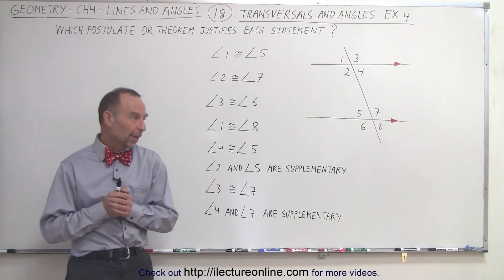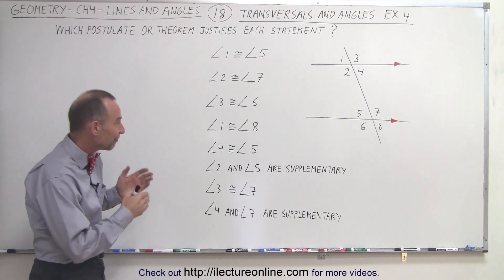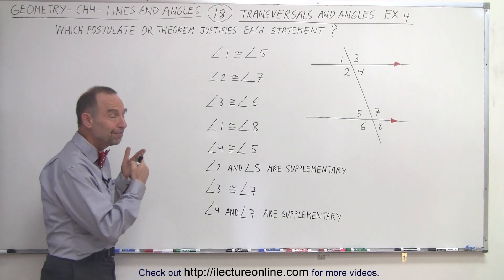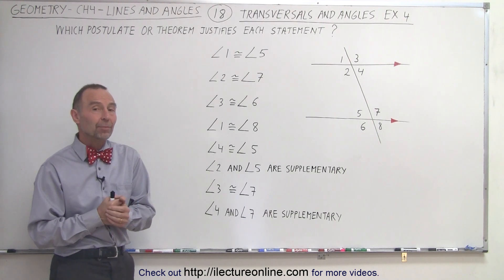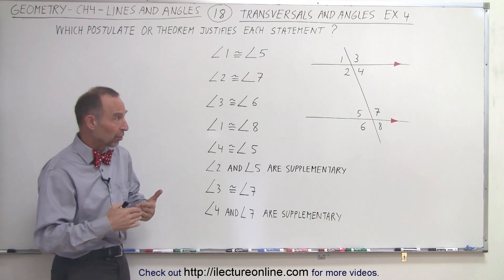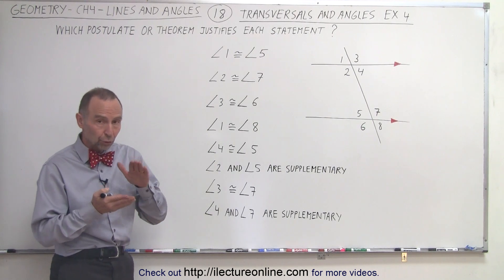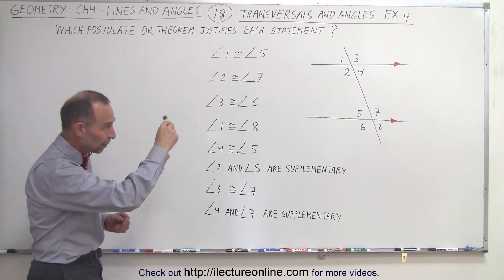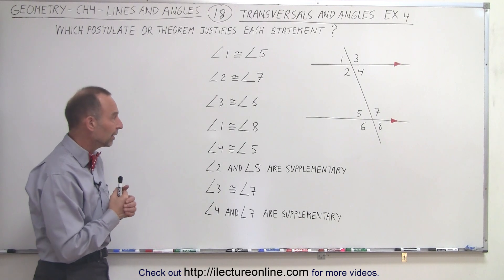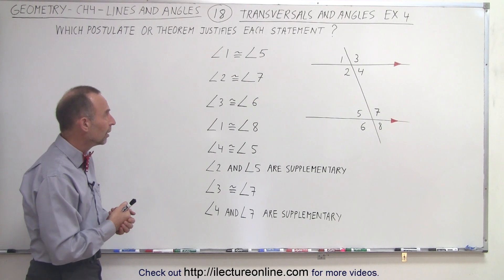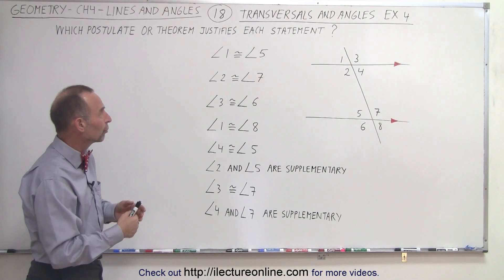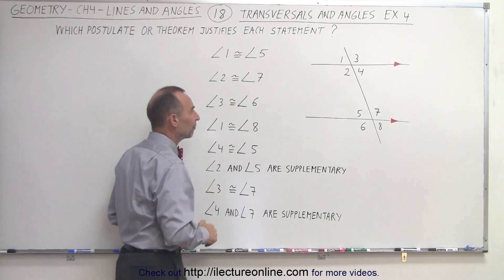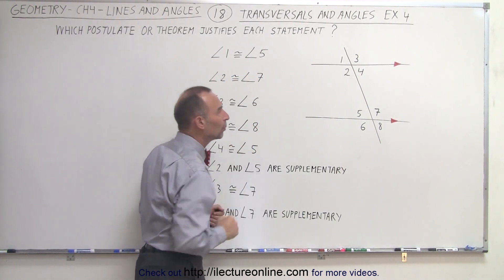Welcome to our lecture online. We have eight statements and we're supposed to tell why we can make these eight statements. We have one postulate and three theorems dealing with two parallel lines and a transversal. Notice the numbers are scrambled a bit from our normal ordering, but here we're told, for example, that angle one is congruent to angle five. Why can we say that?